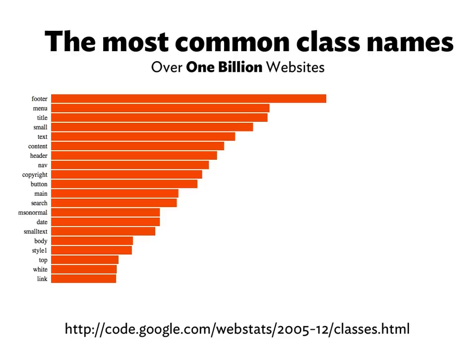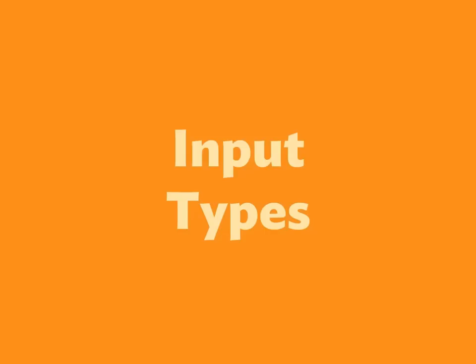Back in 2005, Google did a study where they looked at over a billion websites and figured out what the most common class names on elements were. The most popular class name ever is 'footer,' and this was some of the research used when HTML5 was deciding what elements to create. 'Footer' is obviously one of the new elements in HTML5. You'll also see 'date' and 'search' in that chart, which made their way into HTML5 thinking.